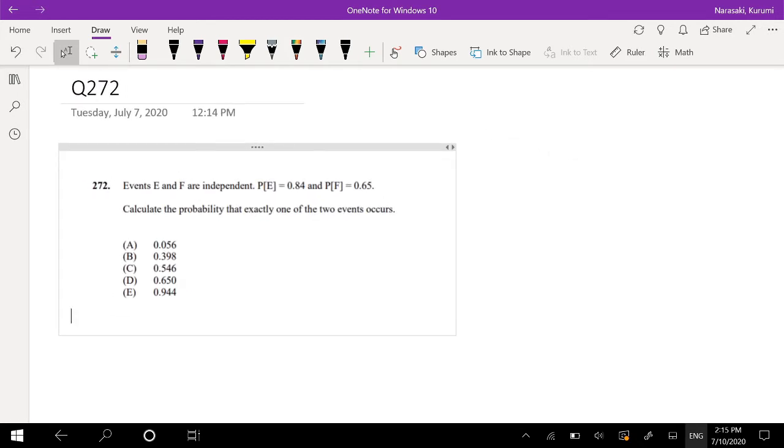Assuming that you already attempted it, let's just dive right in. E and F are independent events. Calculate the probability that exactly one of the two events occurs.